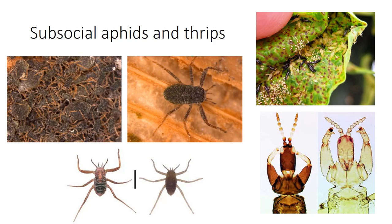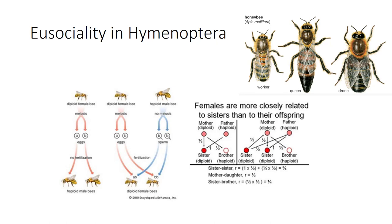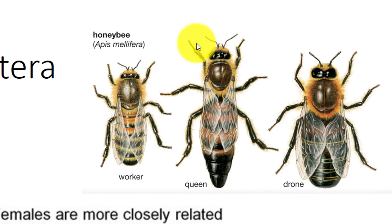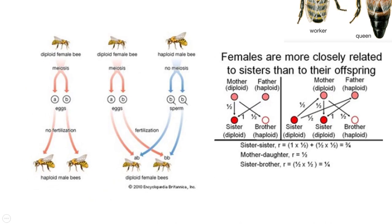Eusocial hymenopterans have a division of labor in their colonies involving a caste system comprising a reproductive queen, non-reproductive workers, and a defensive soldier or drone group. There may be further subcastes that perform specific tasks. There is a haplodiploid genetic system in which queens control the sex of their offspring. The males develop from unfertilized eggs and are haploid, and females develop from fertilized eggs and are diploid. In this system, there are behavioral and chemical maintenance of the monarchy.